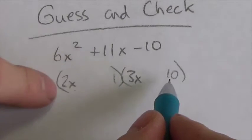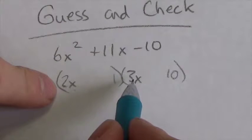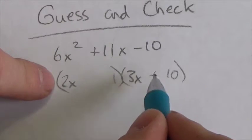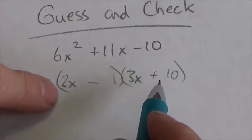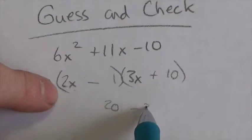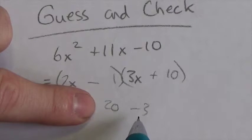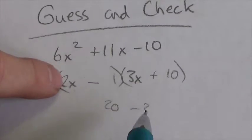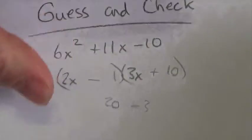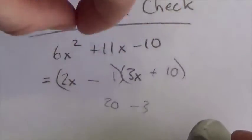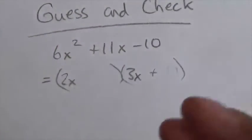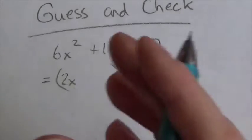The only reasonable guess is 1 and 10. Let's multiply these out: 2x times 10 gives 20, and 1 times 3 gives 3. The larger factor needs to be positive, so this would be positive 20 and negative 3. Putting those together: 20 minus 3 is 17, not 11. So essentially what I'm doing is guessing and then expanding quickly to see if I'm getting back to the original expression — in this case, I'm not. So 10 can't be broken up into 1 and 10.